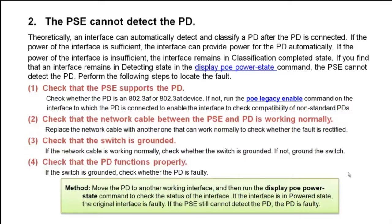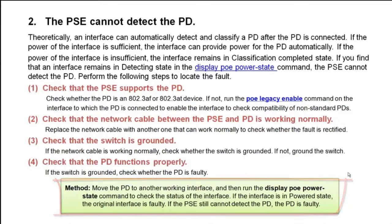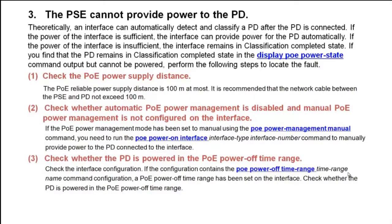3. Check that the switch is grounded. If the network cable is working normally, check whether the switch is grounded. If not, ground the switch. 4. Check that the PD functions properly. If the switch is grounded, check whether the PD is faulty. Move the PD to another working interface and run the display PoE power state command to check the status of the interface. If the interface is in powered state, the original interface is faulty. If the PSE still cannot detect the PD, the PD is faulty.